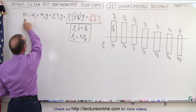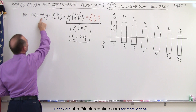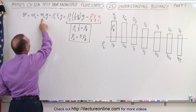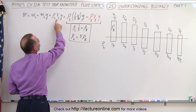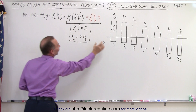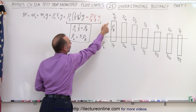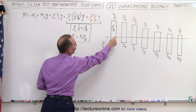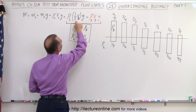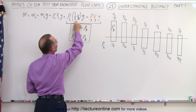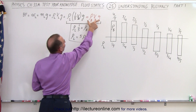We know that the buoyancy force is equal to the weight of the displaced liquid, which is equal to the mass of the liquid times g. The mass can be written as the density times the volume — this is the volume of the displaced liquid, which in the first case is going to be one-fifth the volume of the block. So if one-fifth of the volume of the block is suspended underneath the water, only one-fifth the volume of the block is being displaced, and we can set that equal to the weight of the block.